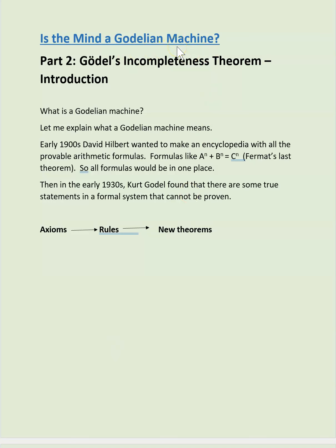What is Godel's Incompleteness Theorem? In the early 1900s, David Hilbert wanted to make an encyclopedia with all the provable arithmetic formulas — formulas like a to the power n plus b to the power n equals c to the power n, known as Fermat's Last Theorem — so all formulas would be in one place.